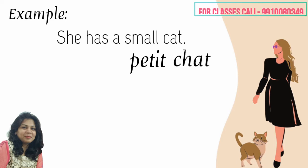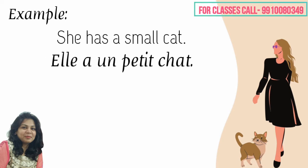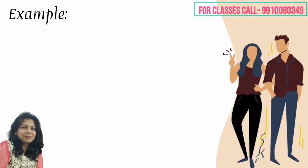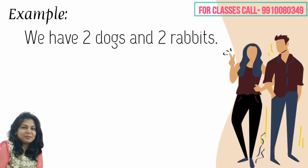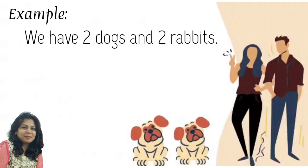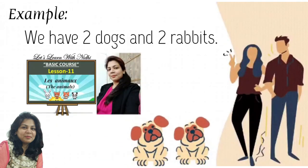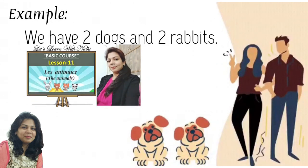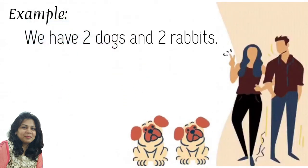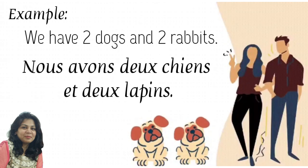So the sentence will be: elle a un petit chat. Now you try to make another sentence: 'we have two dogs and two rabbits.' Dog and rabbit — animals we have done in our last video. So the sentence in French will be: nous avons deux chiens et deux lapins.